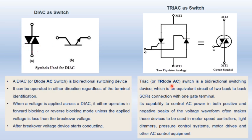Next, we have the TRIAC as a switch. TRIAC is a triode AC switch. It is a bi-directional switching device, which is an equivalent circuit of back-to-back SCR connection with one gate terminal. Its capability to control AC power in both positive and negative peaks of the voltage waveform makes this device commonly used in motor speed controllers, light dimmers, pressure control systems, motor drives, and other AC control equipment.